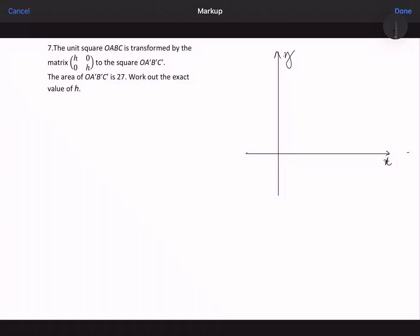So the unit square OABC is transformed by the matrix H0, 0H to the square O'A'B'C'. The area of the transformed square is 27 units. We want to work out the exact value of H.